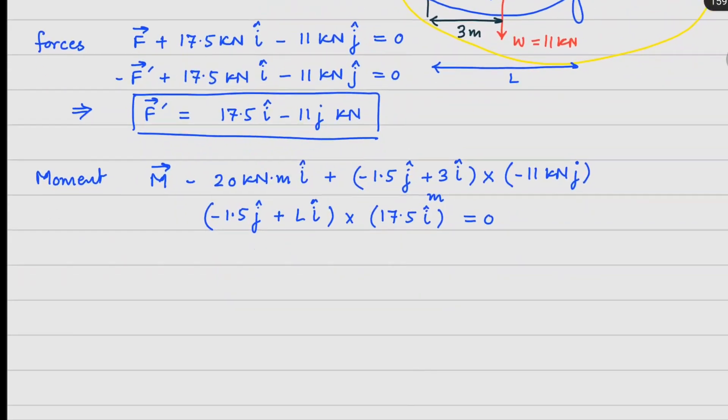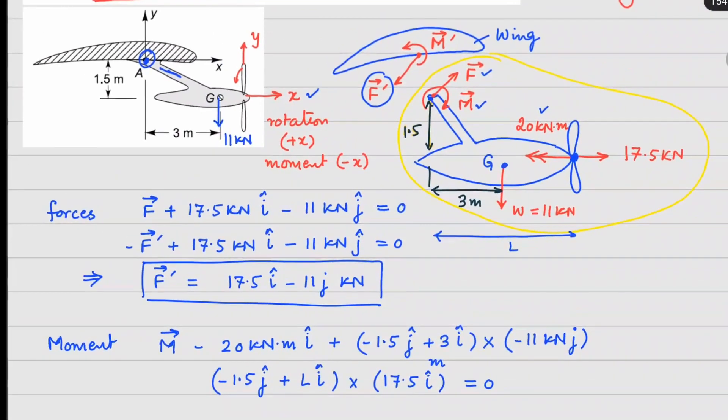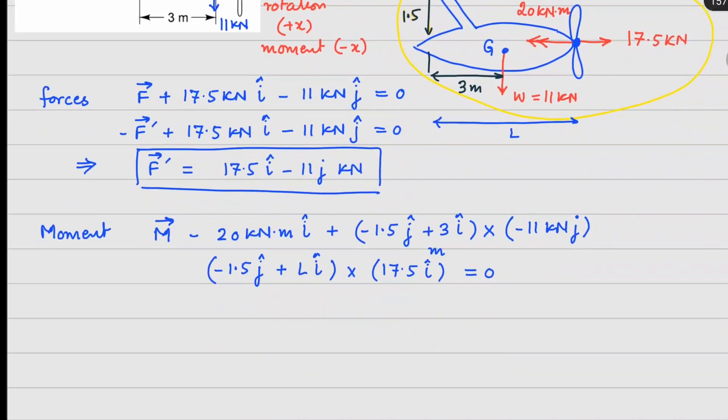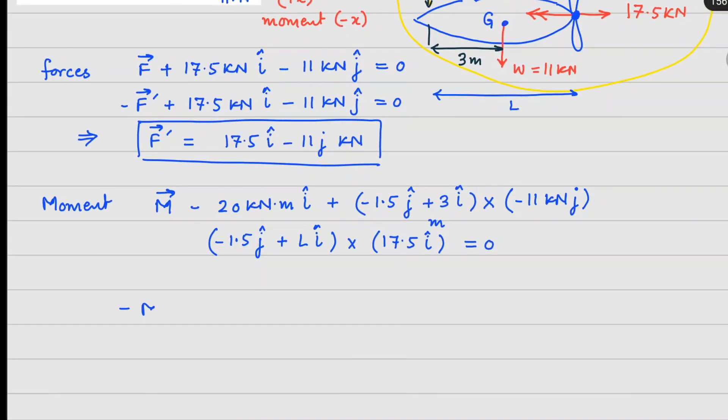Now, again, I can replace M with minus of M'. So minus of M' goes here, minus 20 i cap. Since all the terms are in kN meter, I will write it later. Minus 20 i cap goes here. Now, if you notice here, this j cap and j cap, this cross product will be 0. So this 3 i cap cross 11 j cap is going to give us minus 33, I cross J is going to give you K cap. So now this is done.